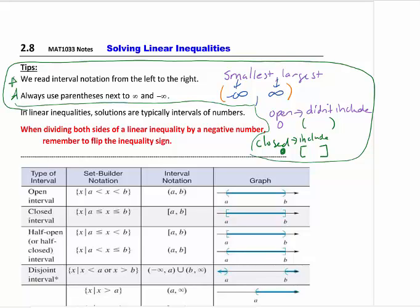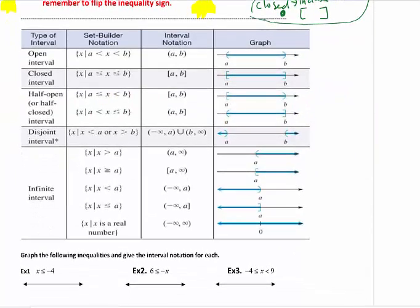When we are solving linear inequalities, your solution is generally going to be written in interval notation. The only difference between solving a linear inequality and a linear equation is: if you multiply or divide by a negative number, you must remember to flip the inequality sign. I still use my rules of multiplying and dividing by a negative number, but since it's not an equal sign, we have to change the direction of the inequality. This applies only when multiplying and dividing, not when adding and subtracting.